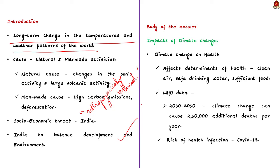Coming to the body of the answer, write about the impacts of climate change on India. First, its impact on health. According to the World Health Organization, between 2030 and 2050, climate change is expected to cause approximately 250,000 additional deaths per year due to climate change-induced heat stress and associated issues like malnutrition, malaria, and diarrhea.